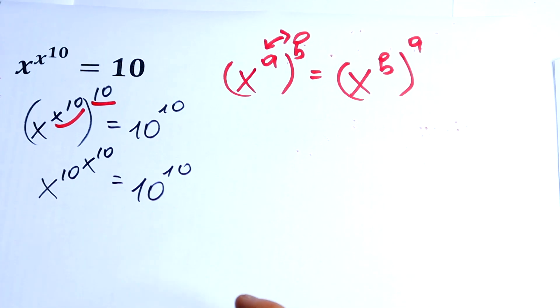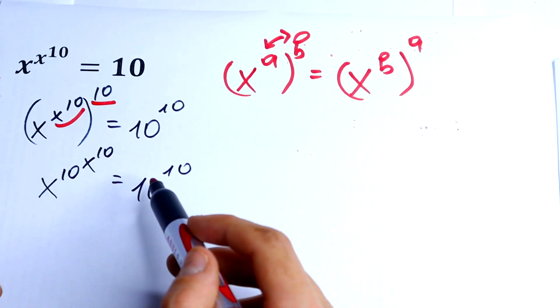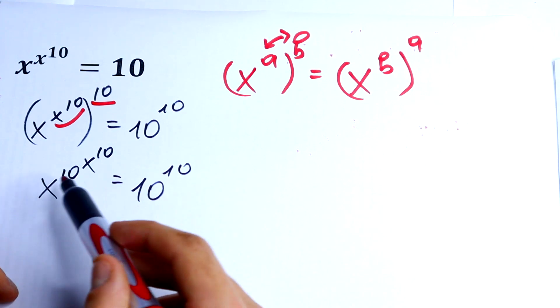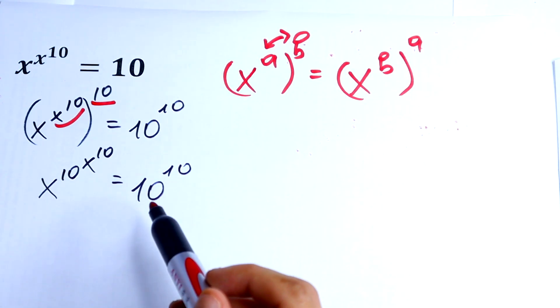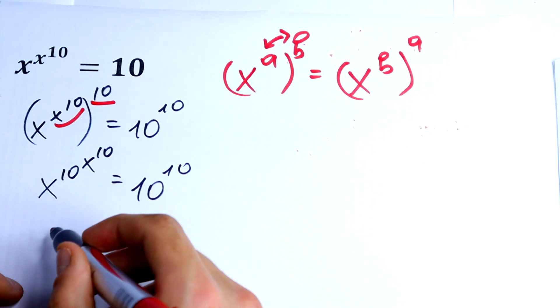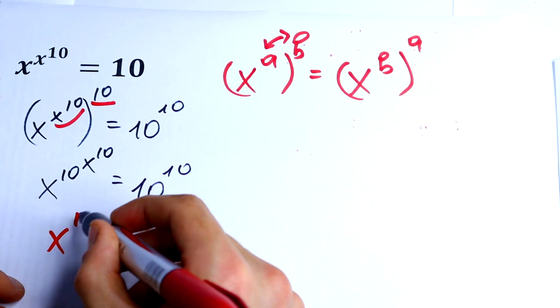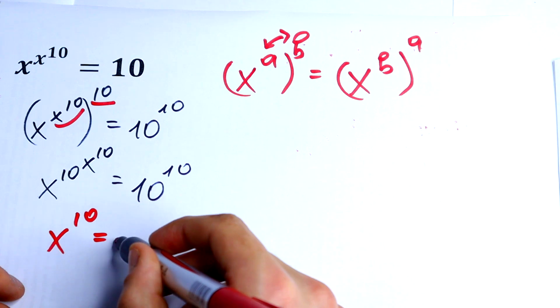So what we can see right here: same base, same exponent, same base, same exponent. These for sure need to be equal. So x to the 10th power should be equal to 10.